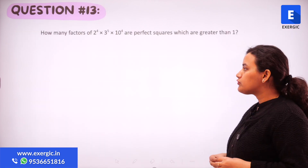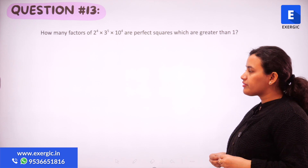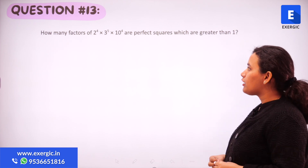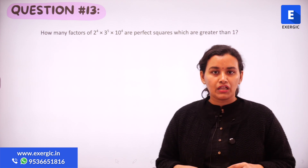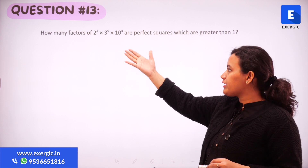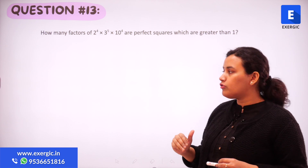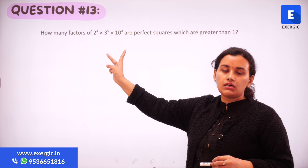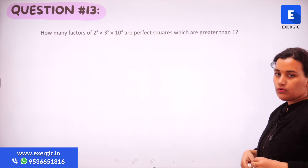How many factors of 2 raised to the power 4, multiplied with 3 raised to the power 5, multiplied with 10 raised to the power 4, are perfect squares which are greater than 1? We have been given a number in the form of a product, and we want to find out how many factors of this number are perfect squares and are greater than 1.